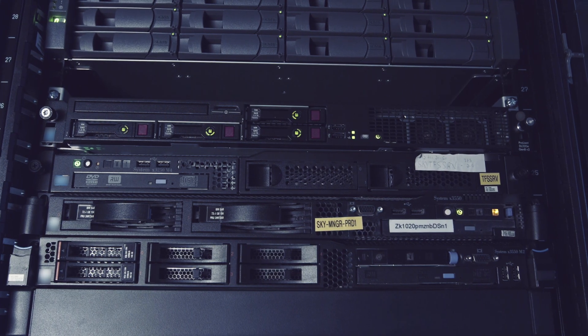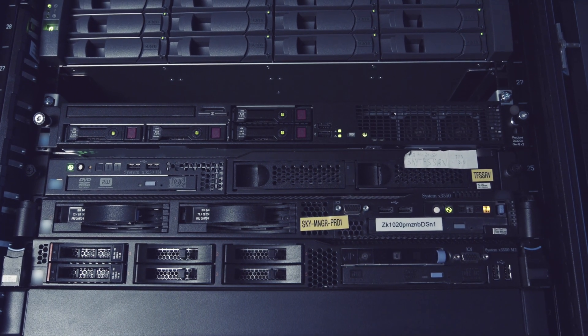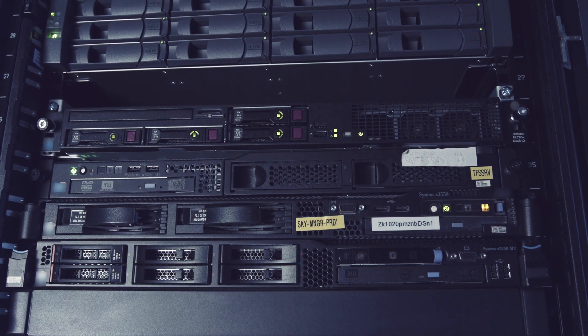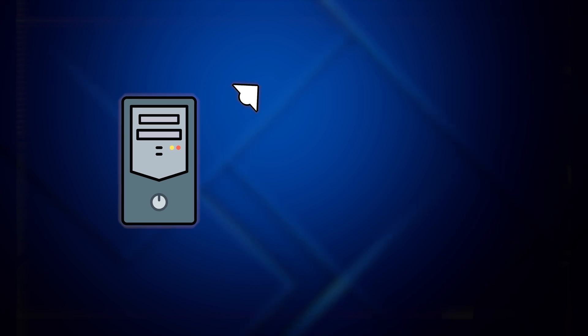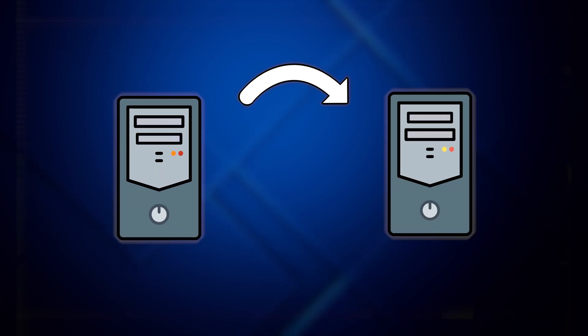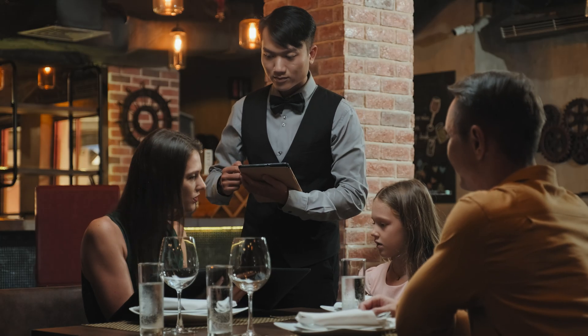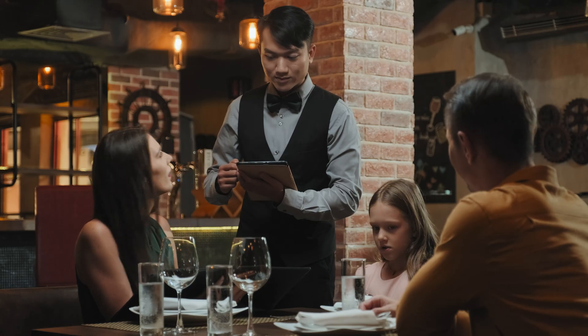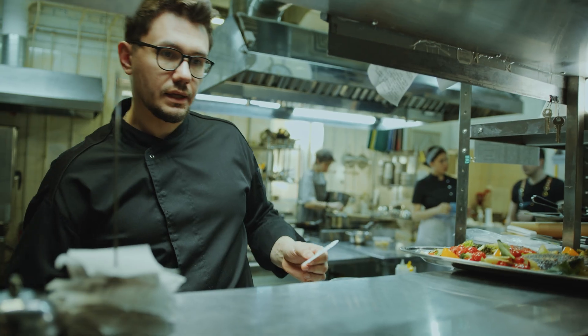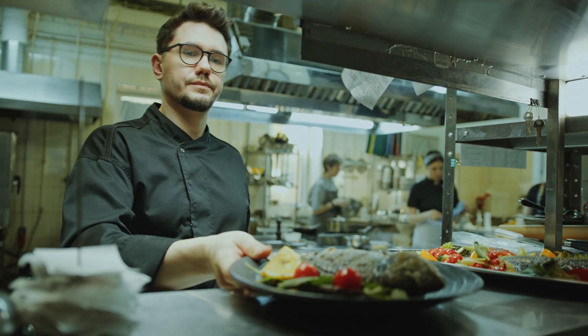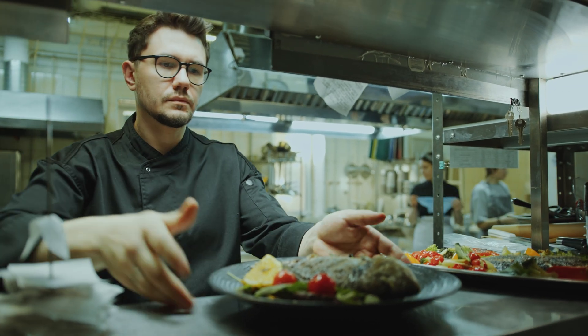A server is simply a computer, but unlike the laptop or phone you're using right now, a server's job is to serve information and services to other computers, which are called clients. Think of it like a restaurant — your device is the customer placing an order, and the server is the kitchen that prepares and delivers exactly what you requested. This relationship is called the client-server model, and it's the foundation of how the internet works.